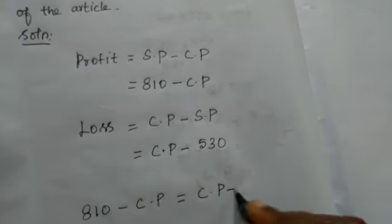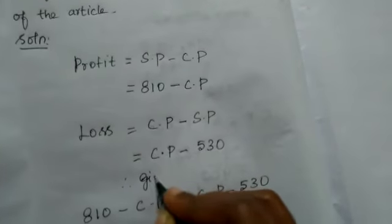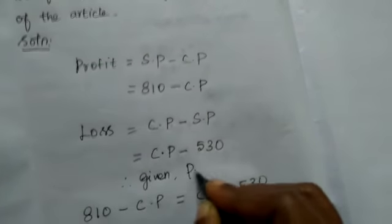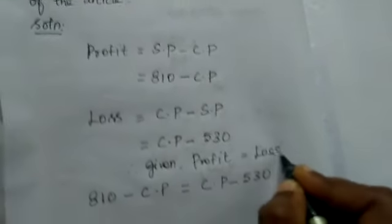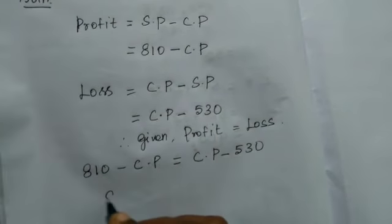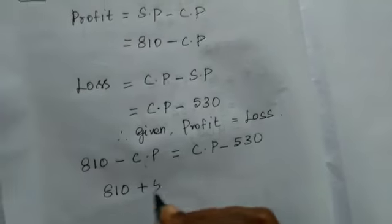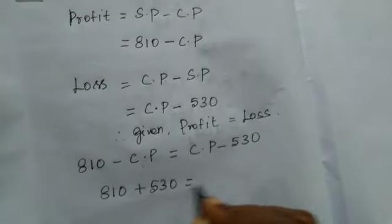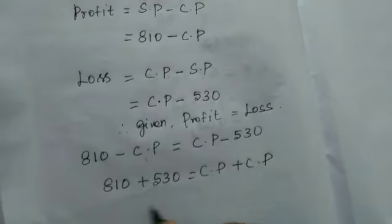Therefore, now bring the numbers to one side and the variable to the other side: 810 plus 530 equals cost price plus cost price. Now add: 810 plus 530 equals 1340, which equals 2 cost price.